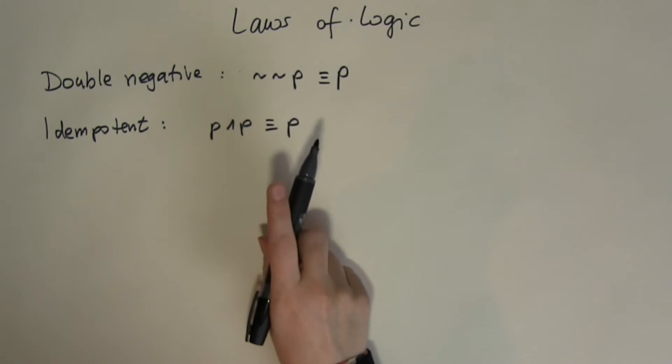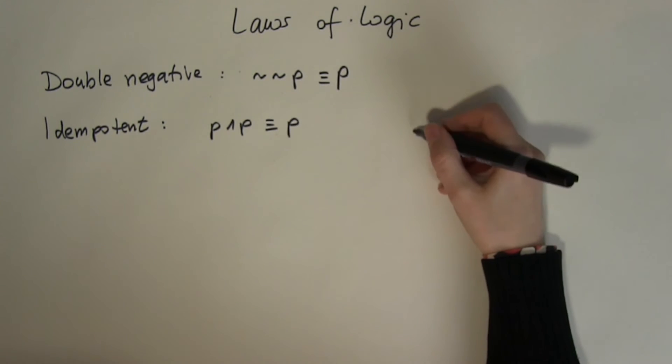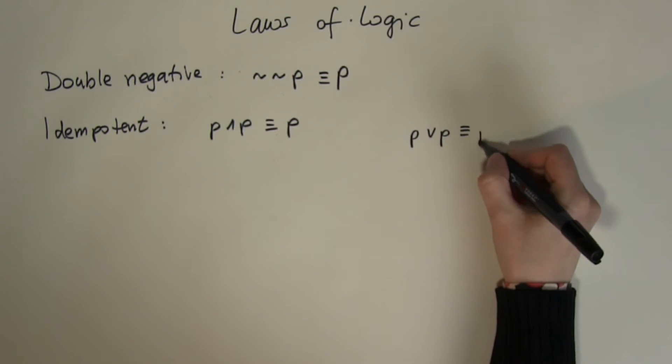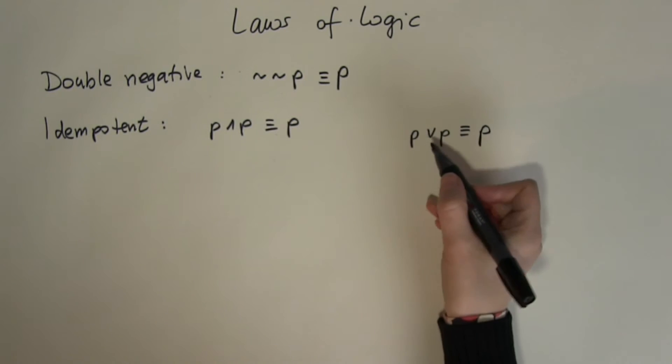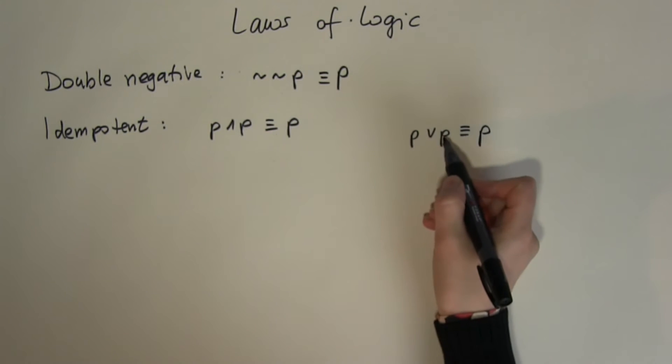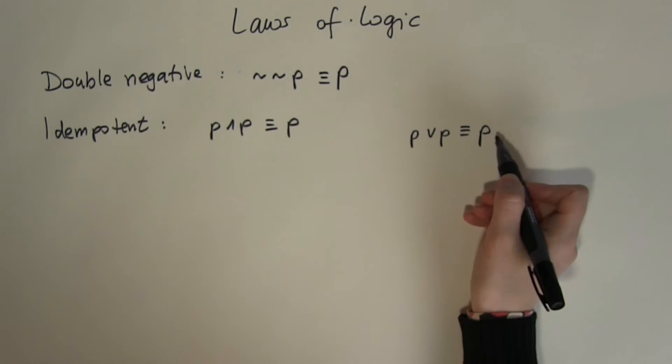How does that change if I have the OR operation? P or P? Well it doesn't really change because I end up again with the same thing. True or true gives me true which was P, and false or false again gives me false which was P.